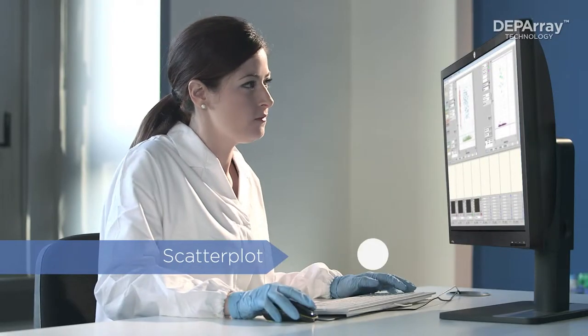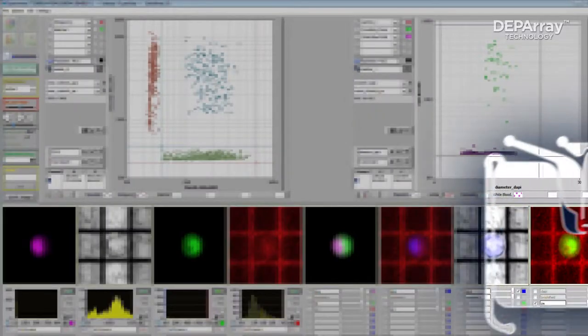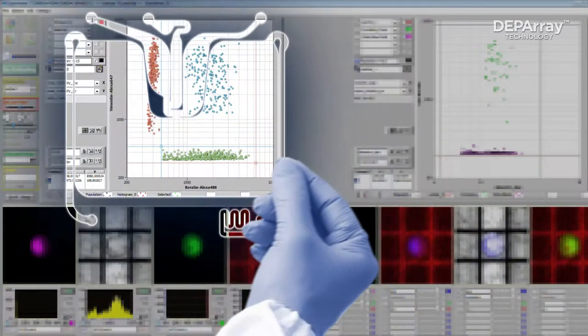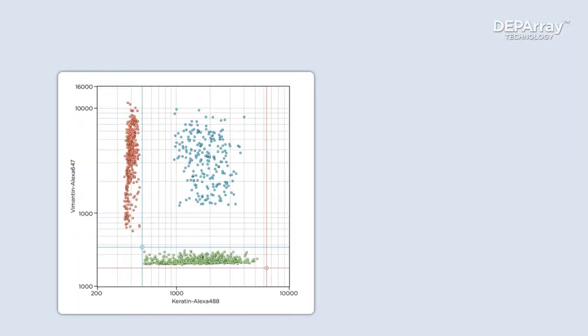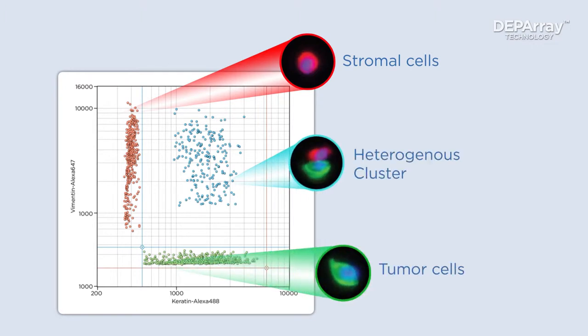So a pure collection of phenotypically distinct cells can be recovered and used for subsequent downstream analysis, achieving unambiguous and precise molecular characterization through analysis of pure cell populations.